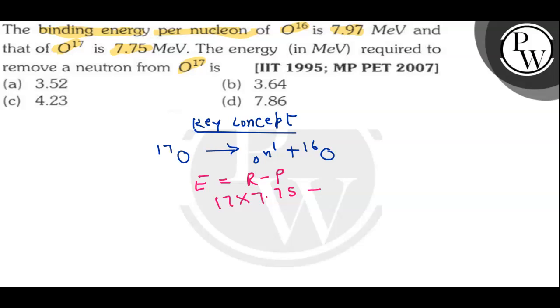Minus in case of product, what would it be? It would be like 16 of O, 16 into 7.97. So the difference of the energy gives us the energy of neutron that would be equal to 4.23 MeV.